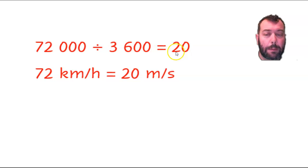So 72 kilometres per hour is equal to 20 metres per second. That's it.